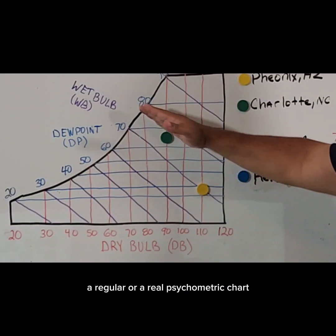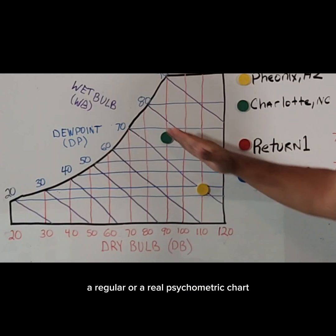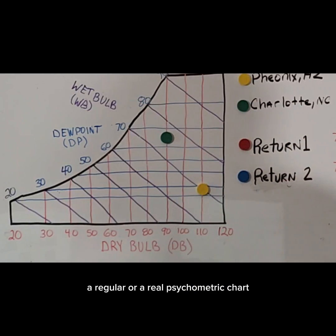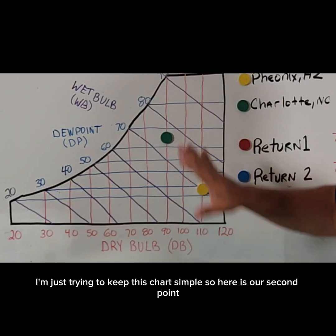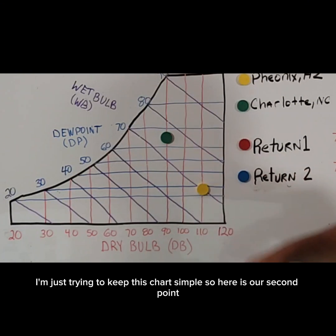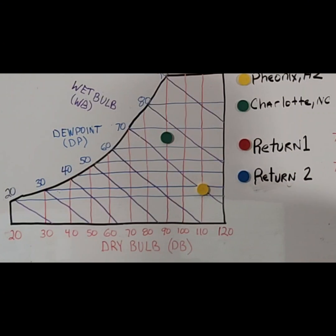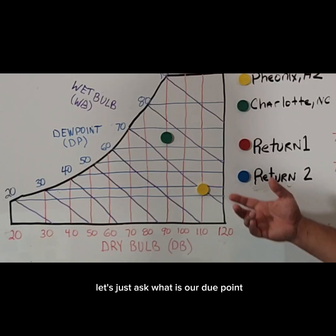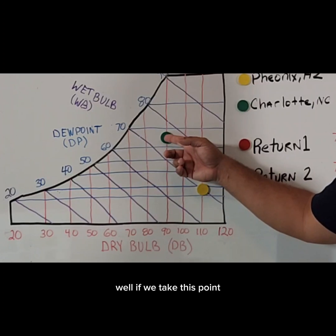A real psychrometric chart is going to have all the lines that you need — I'm just trying to keep this chart simple. So here's our second point. Let's ask: what is our dew point?